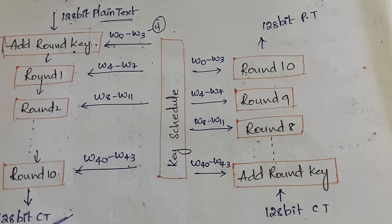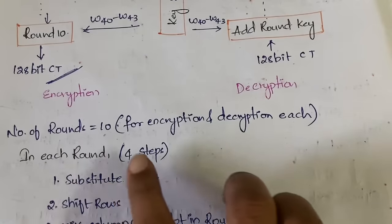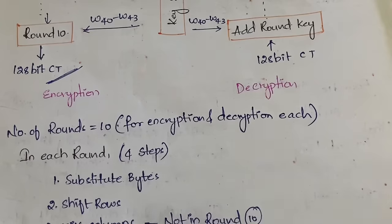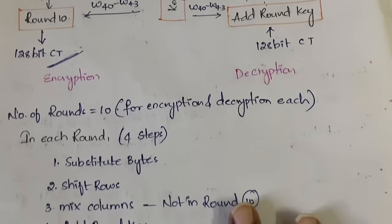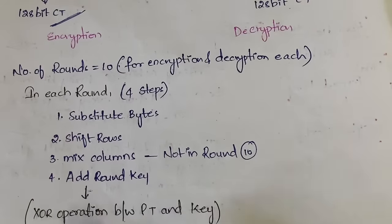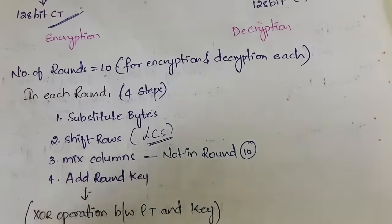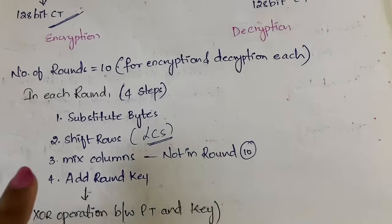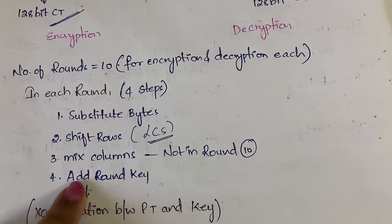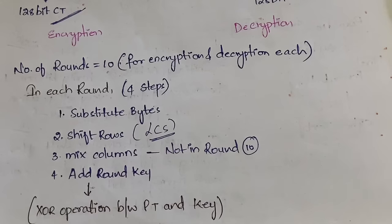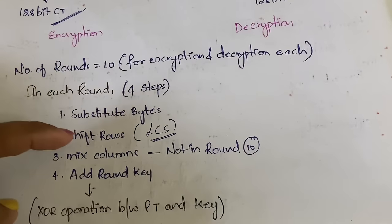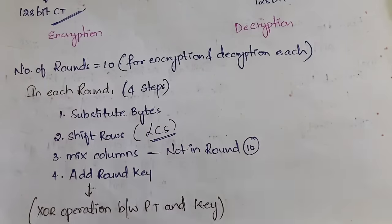In each round there are four steps. The first is Substitute Bytes, the second is Shift Rows — where a left circular shift is performed, similar to what we did in the DES algorithm. The third is Mix Columns, and the fourth is Add Round Key. There are 10 rounds each for encryption and decryption. Note that in round 10, the Mix Columns step is omitted — round 10 has only three steps: Substitute Bytes, Shift Rows, and Add Round Key.